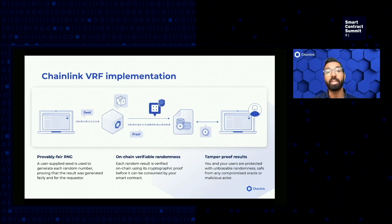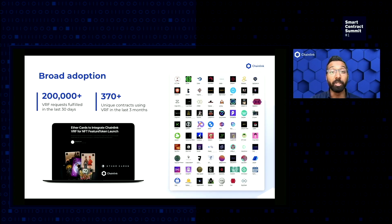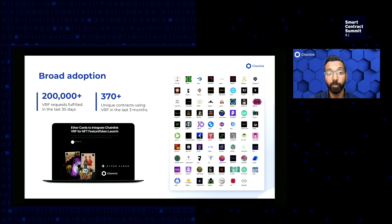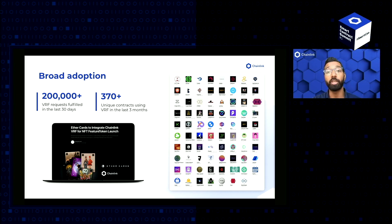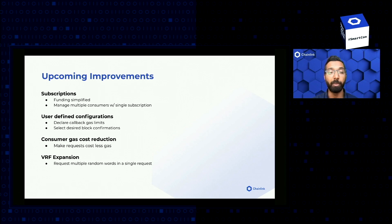The end result is reliable randomness for smart contracts that allows you to focus on your business with confidence. Chainlink VRF meets all the requirements mentioned earlier — it is unpredictable, fair and unbiased, provably random, and tamper-proof. We also have a rapidly growing community of users. In just the last 30 days, we've had 200k or more fulfilled requests and over 370 unique contracts requesting randomness over the last three months. Chainlink VRF is currently available on Ethereum, Binance Smart Chain, and Polygon, with plans to expand to many more chains as our user community grows. Our team is constantly in communication with our users and always looking for ways to improve the product and broaden adoption.